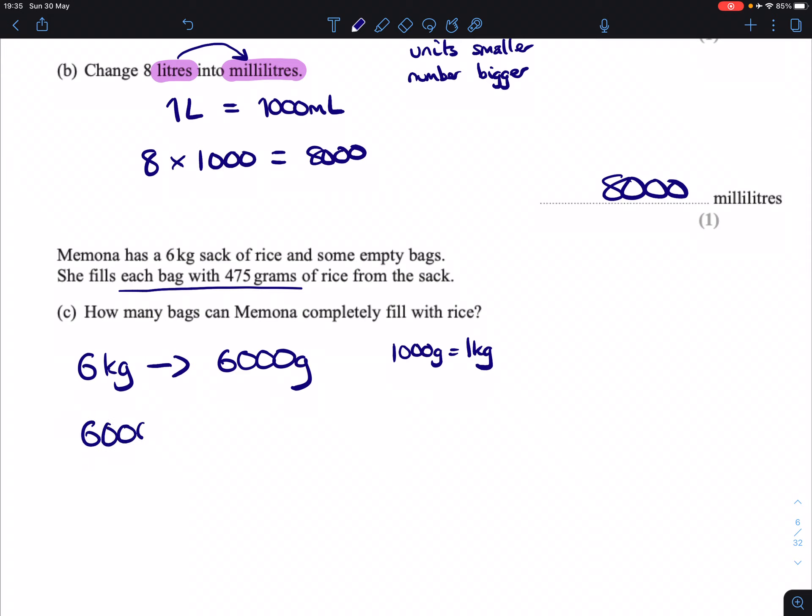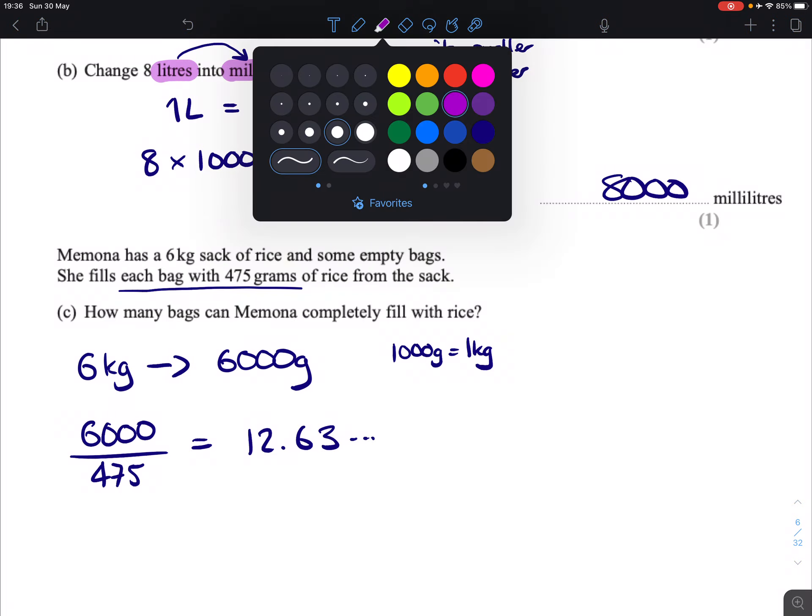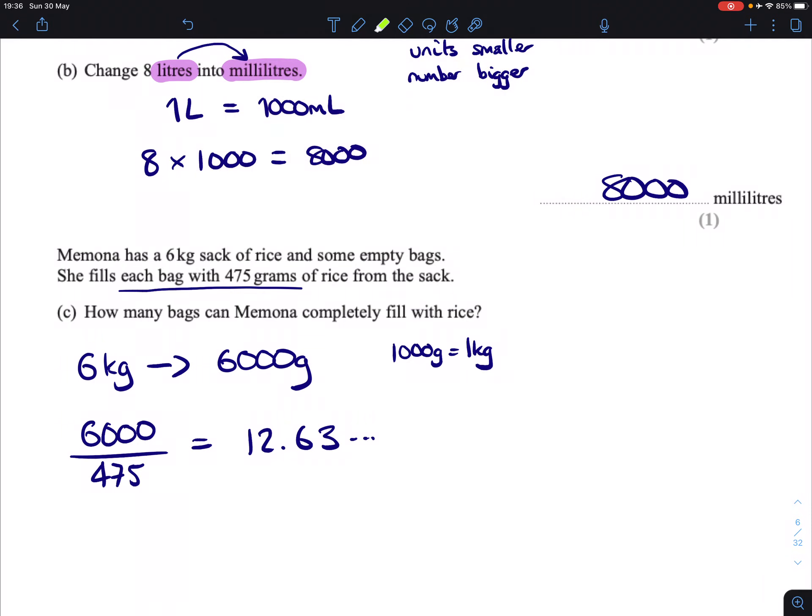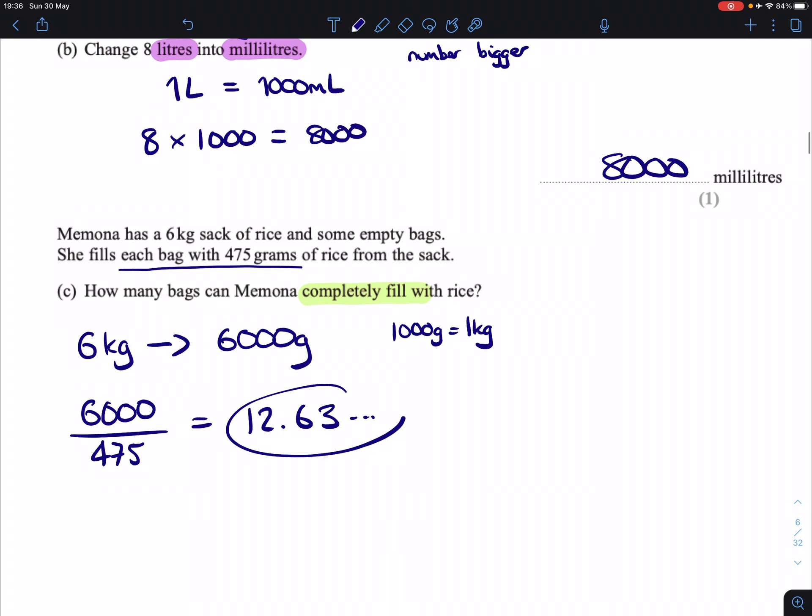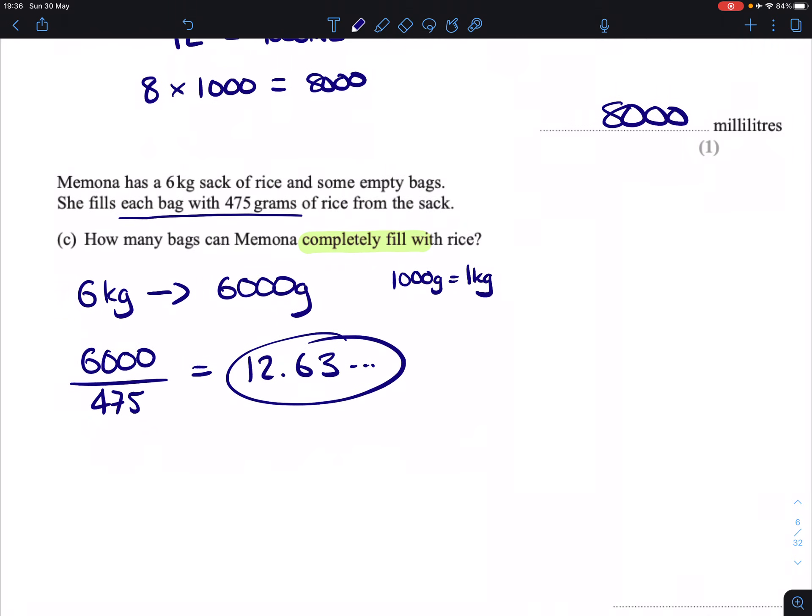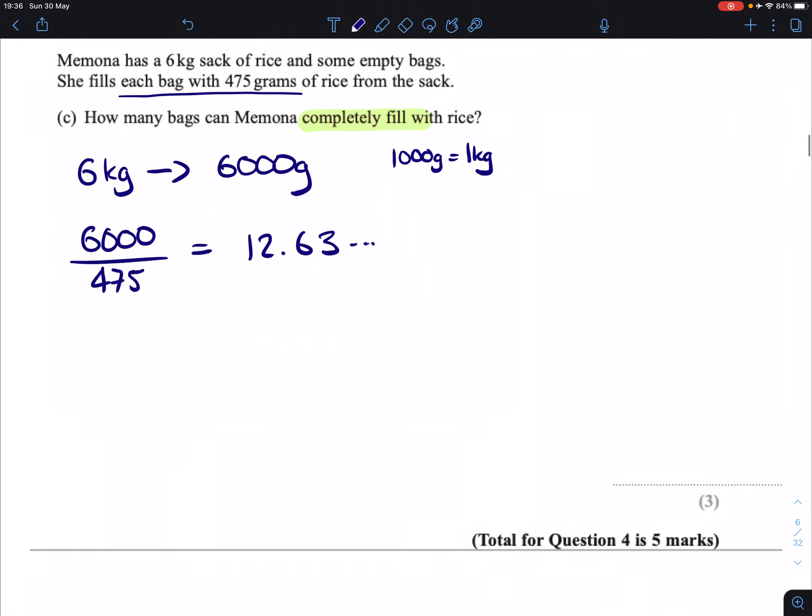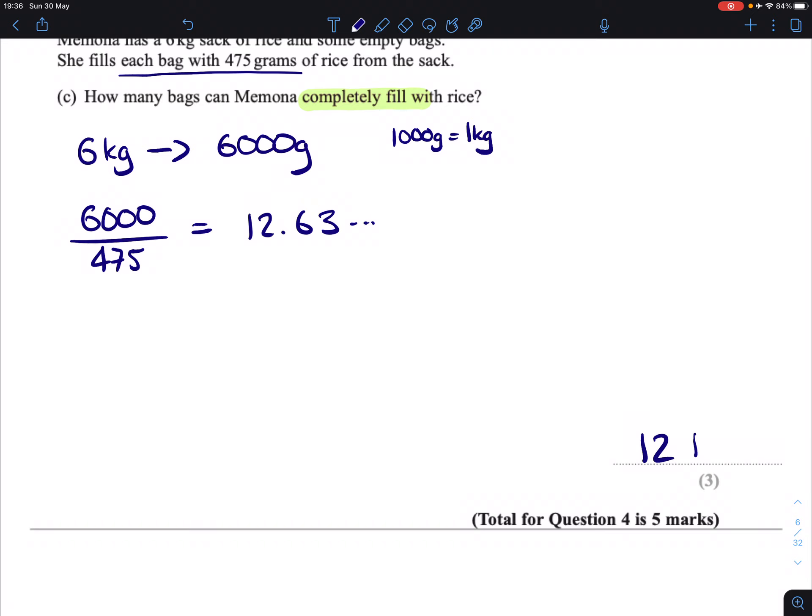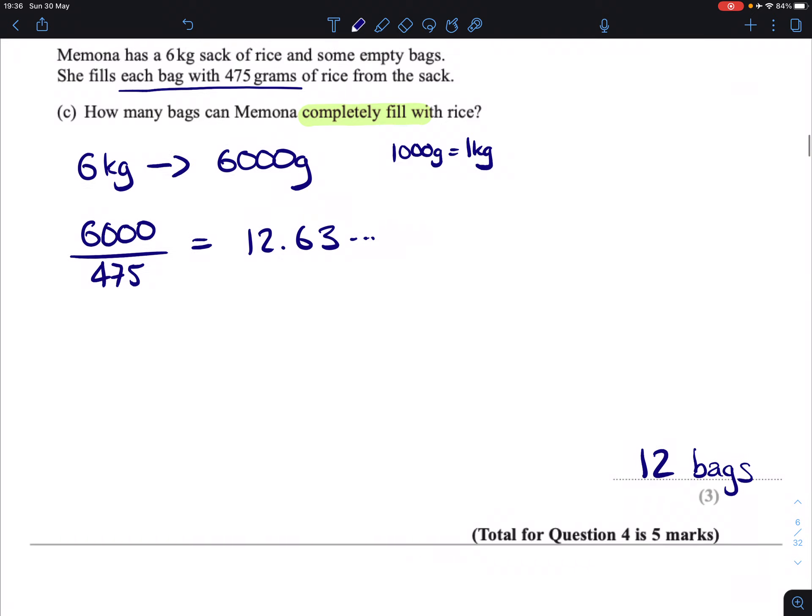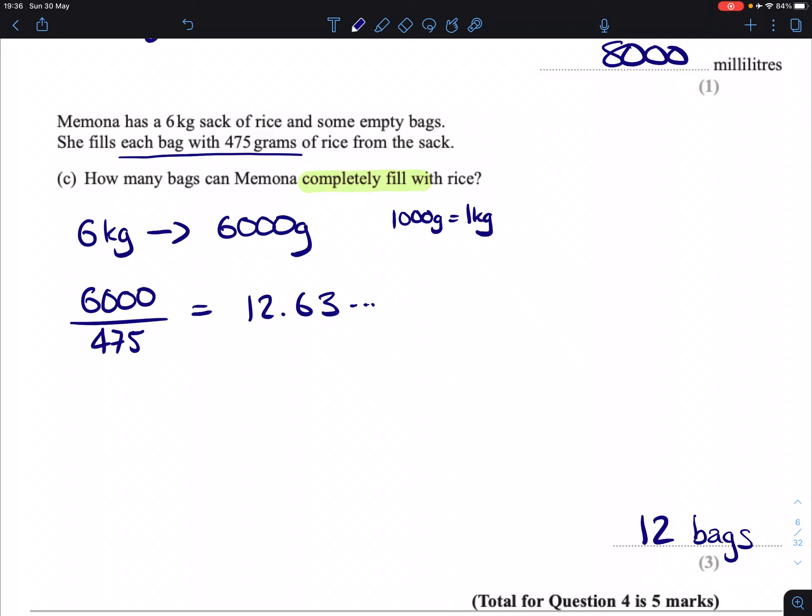We divide that by the amount that each bag can hold, which is 475. If we do that, our calculator then gives us the answer 12.63, so on and so forth. So the question itself asks, how many bags can Momona completely fill with rice? This answer here tells us that we've got 12.63 and change bags, which means our final answer is actually 12 bags. That's the amount of full bags we can completely fill with rice. Done.